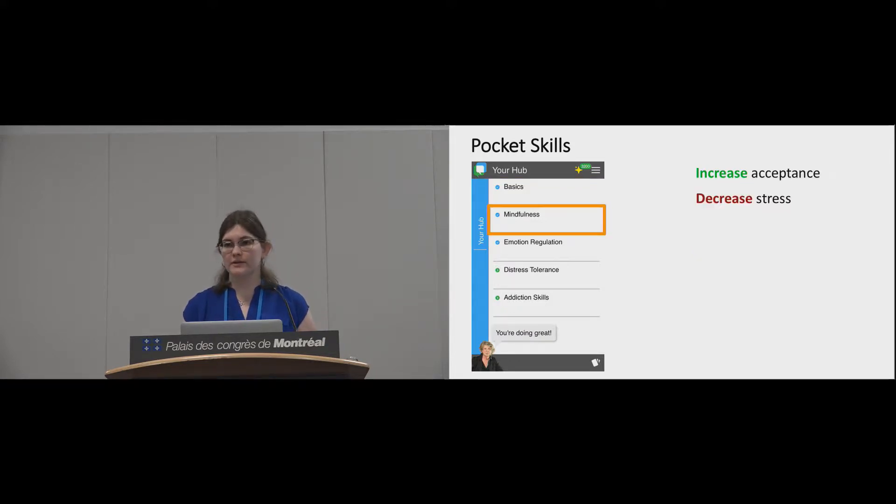The mindfulness module contains skills to teach people to be more accepting and less judgmental and stressed. The emotional regulation module helps people better understand and control their emotions. Distress tolerance skills give people specific healthy alternatives to unhealthy behaviors. So for example, instead of self-harming, someone could take a cold shower or gently snap a rubber band on their wrist. And the addiction skills module was specifically designed to help people overcome addictions.